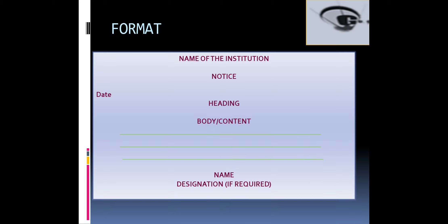Now we come to the format of notice writing. First, draw a box. In the topmost line write the name of the institution. Leave a line and write the word NOTICE in block letters — N-O-T-I-C-E. In the next line write the date, then the heading, and then start with the body or content. After writing the body, write the name and in the next line write the designation of the person writing the notice, if required.